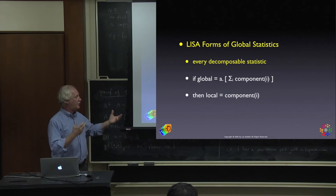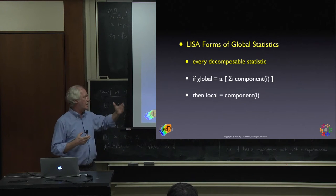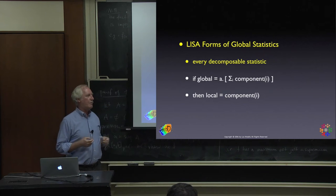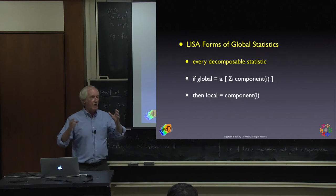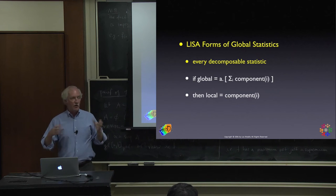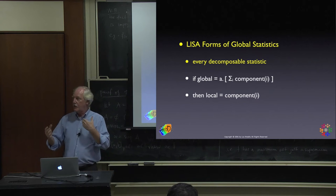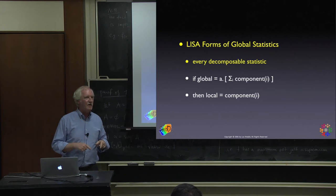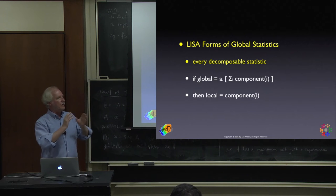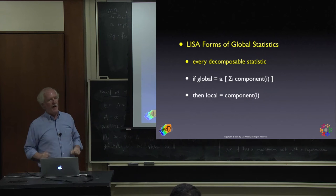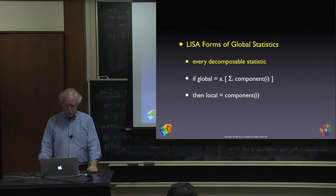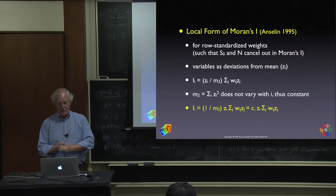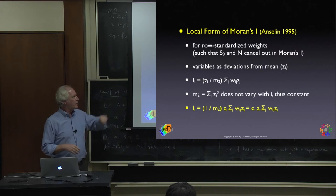You see the connection immediately: the global statistic is proportional to the sum of all the local statistics. It's amazing how many statistics fall into this category — because most of them deal with pairs, with relative magnitudes. For example, Moran's I: using row-standardized weights, the scaling factors cancel out since both numerator and denominator are the number of observations n.